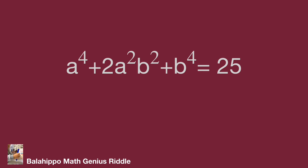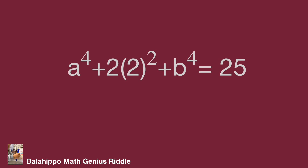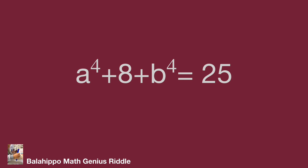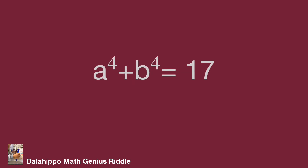So a power 4 plus b power 4 equal to 25, then a power 4 plus b power 4 equals 17.